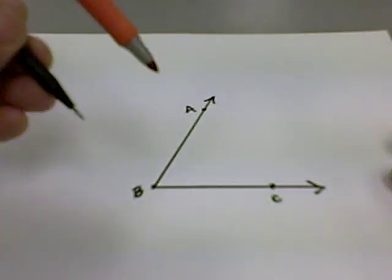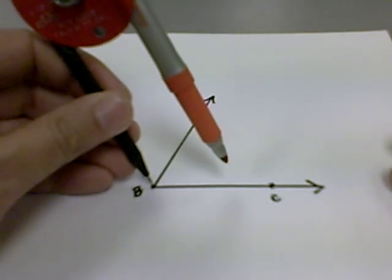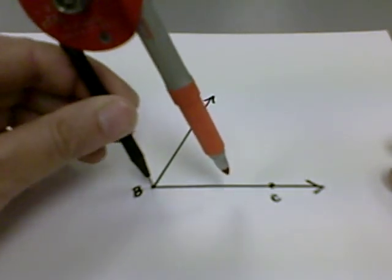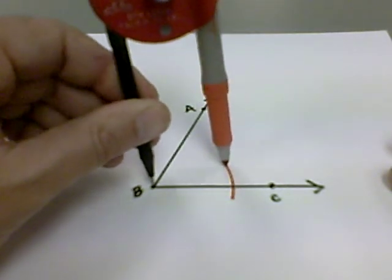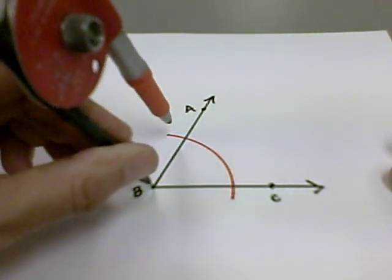The first thing you want to do is place your stylus on the vertex of the angle, in this case point B, and we'll strike an arc through each leg of the angle, or each side.